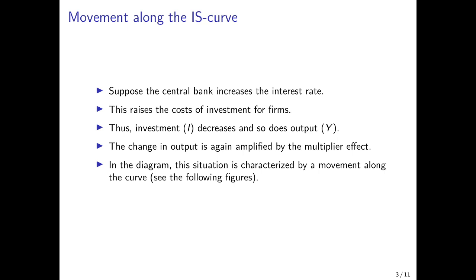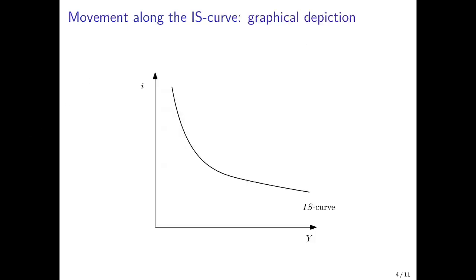In the following diagram, this situation is characterized by a movement along the curve. The diagram depicts the IS curve in the space of the interest rate and income output. It's the downward sloping curve, and initially we are in the situation with an interest rate I0 and an income level output level of Y0.